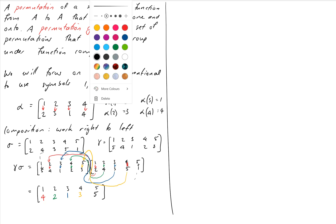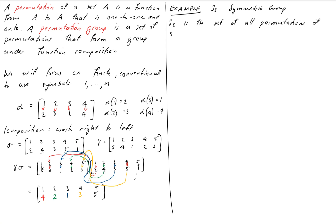Now let's define our first permutation group: the symmetric group S3. S3 is the set of all permutations of 1, 2, 3 — we include every possible permutation of three things, making it the largest possible group we can form from permutations of three elements. The identity, which we call epsilon, simply takes 1, 2, 3 to 1, 2, 3.